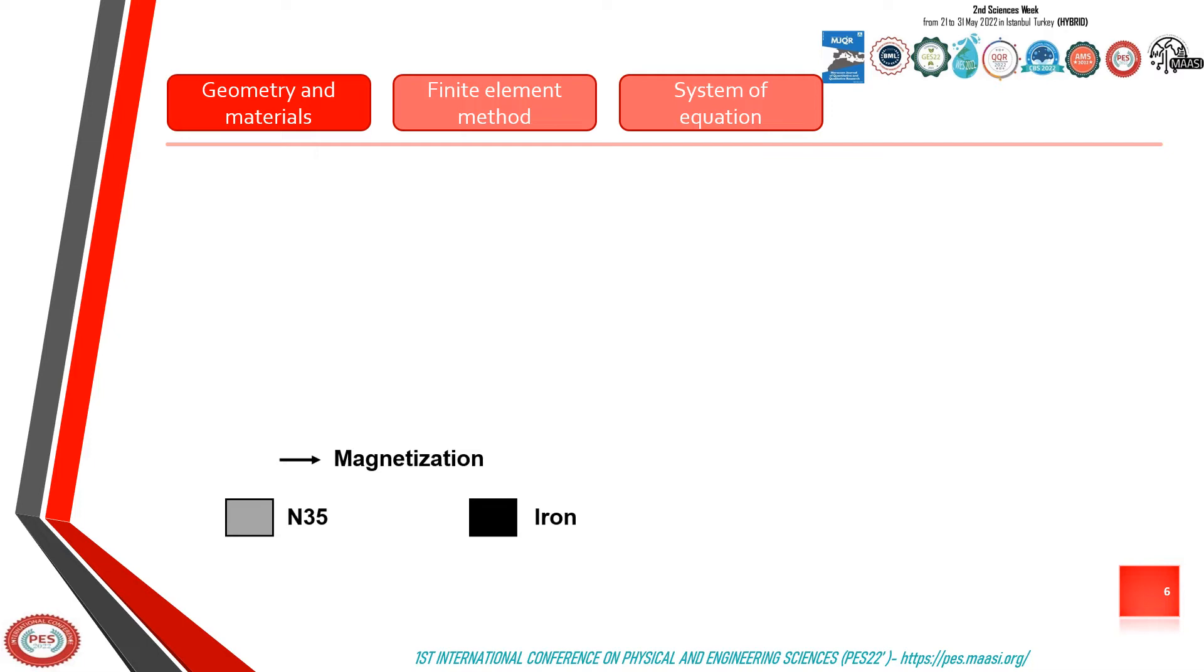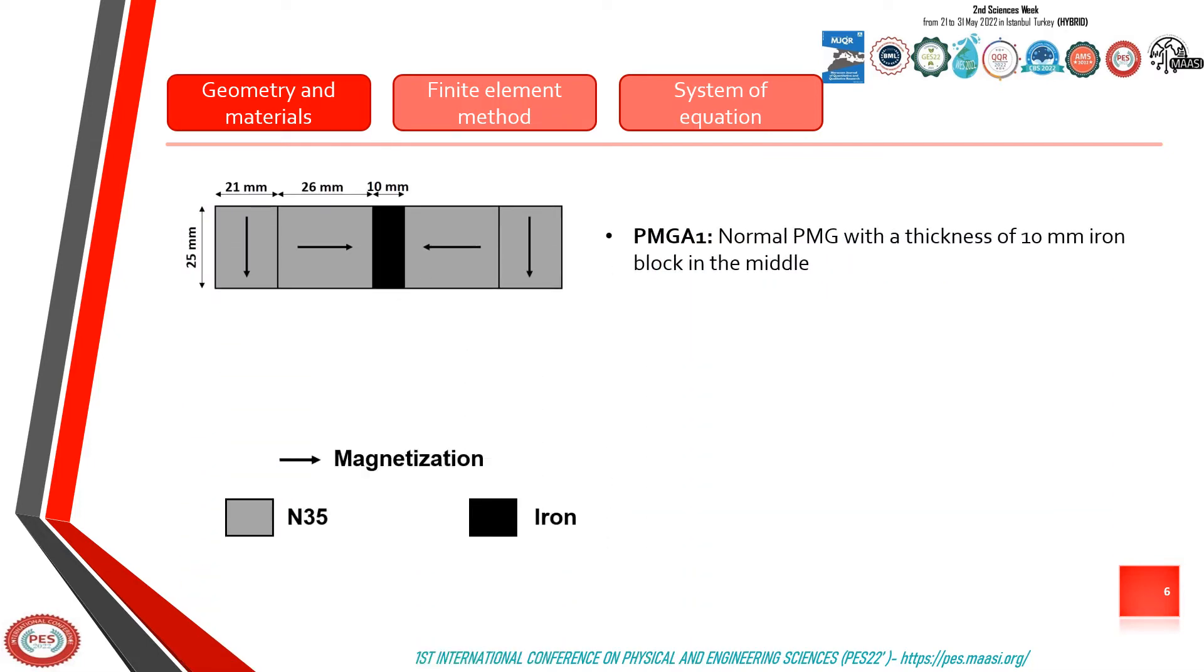Our study is based on the comparison of three permanent magnet arrangements: PMG A1, normal PMG with a thickness of 10mm iron block in the middle; PMG A2, normal PMG without iron block.